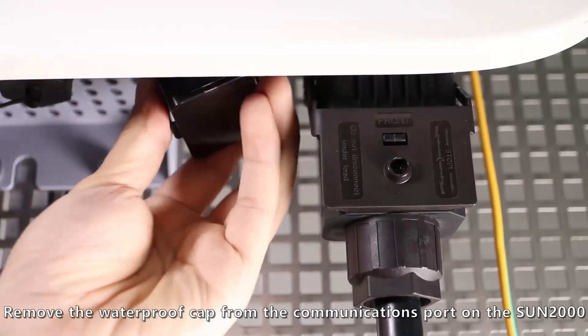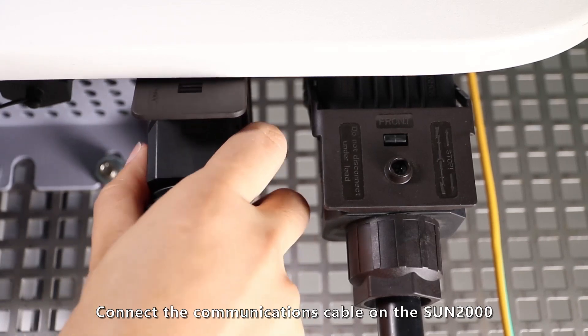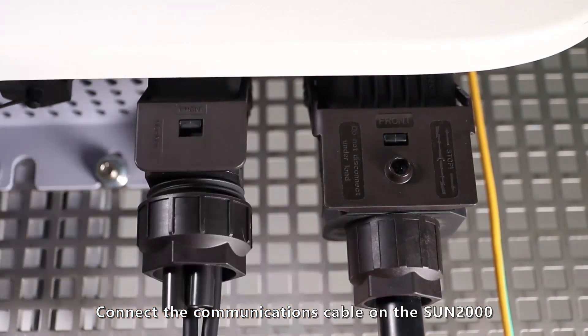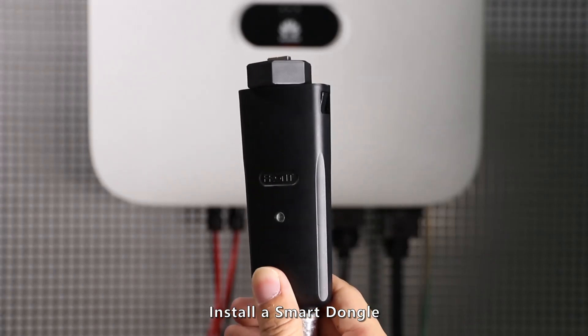Remove the waterproof cap from the communications port on the Sun 2000. Connect the communications cable to the Sun 2000. Install a smart dongle.